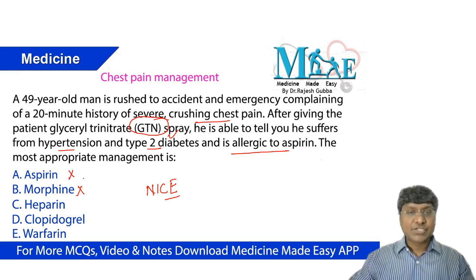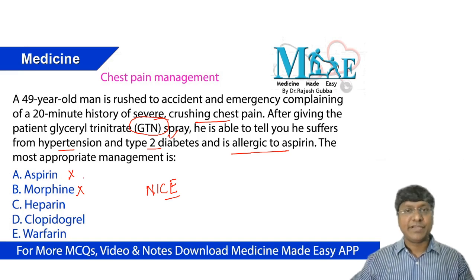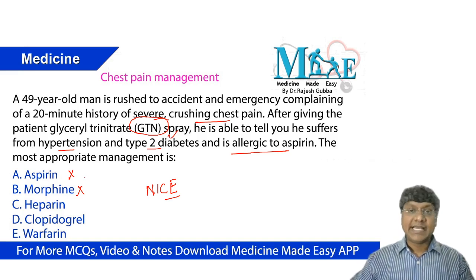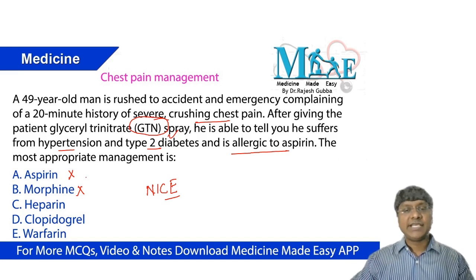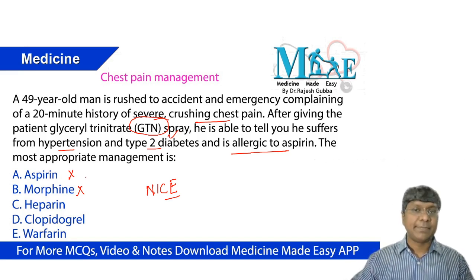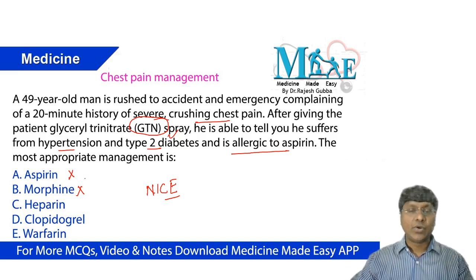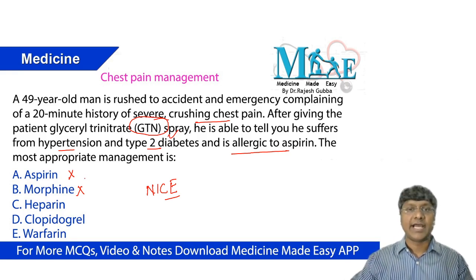Actually we give aspirin as a loading dose of nearly around 325 milligrams, but you have to ask about the allergy to aspirin. Aspirin can cause anaphylactic reaction and respiratory distress. So you need to ask the history about aspirin allergy before supplementing the loading dose of aspirin in patients with underlying coronary artery disease, that is acute coronary syndrome.